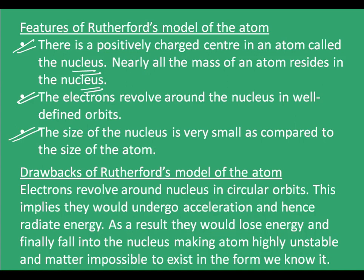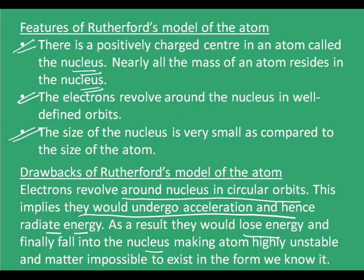Even having done all those experiments and suggesting his own model, Rutherford's model was discarded. The reason was that electrons revolve around the nucleus in circular orbits, which implies they would undergo acceleration and hence radiate energy. As a result, they would lose energy and finally fall into the nucleus, making the atom highly unstable and matter impossible to exist in the form we know. That is, we have this positively charged nucleus surrounded by electrons moving in specific orbits, and when an electron radiates energy it falls towards the nucleus, making matter very volatile.